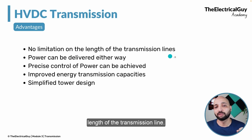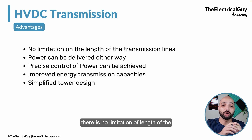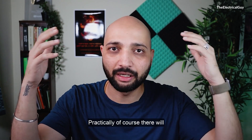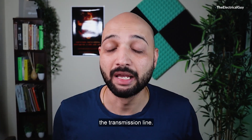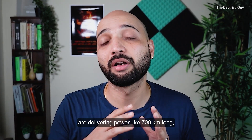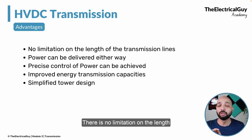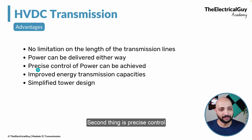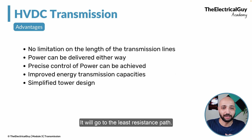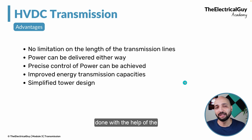The first advantage of HVDC is no limitation on the length of the transmission line. Since we eliminate the inductive and capacitive elements in DC, there is ideally no limitation on transmission length. There are already projects delivering power over 700, 800, even 1000 kilometers. The second advantage is that power can be transmitted either way. Third, precise control of power can be achieved — unlike AC where power flows to the path of least resistance, DC offers greater control through the converter stations.